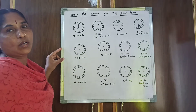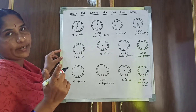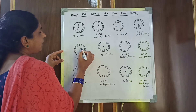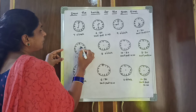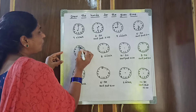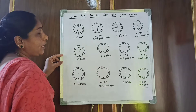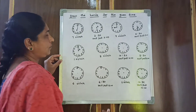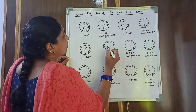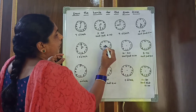Coming to the next one: 1 o'clock. 1 is the hour hand. O'clock means the long hand goes to 12. Draw the short hand to 1 and the long hand to 12.